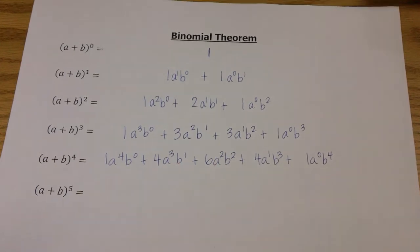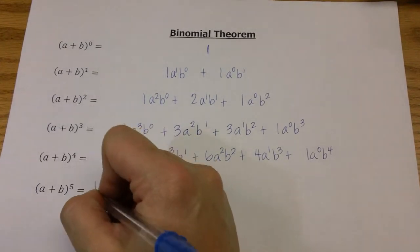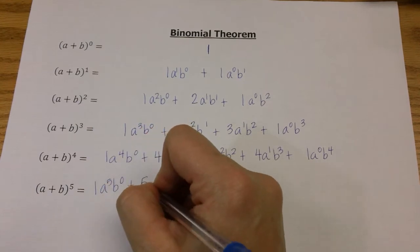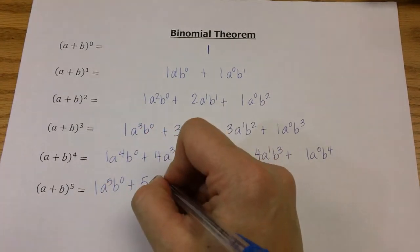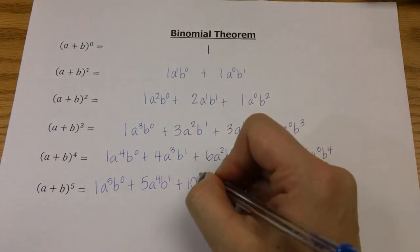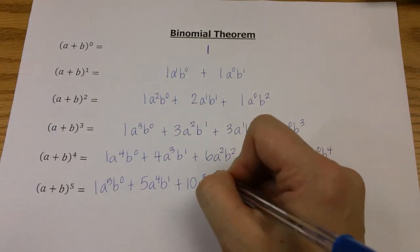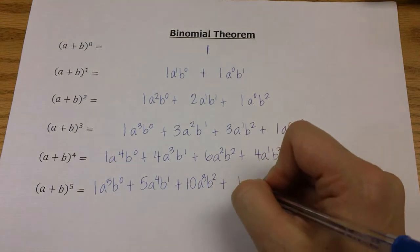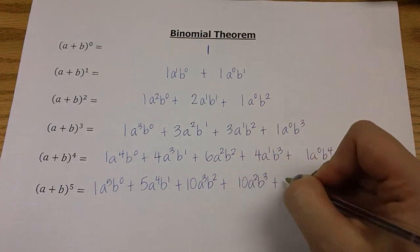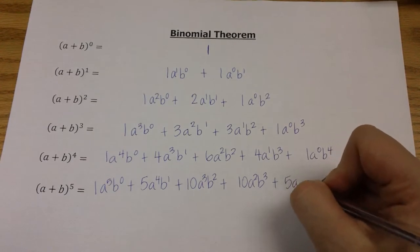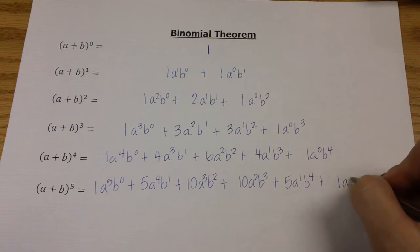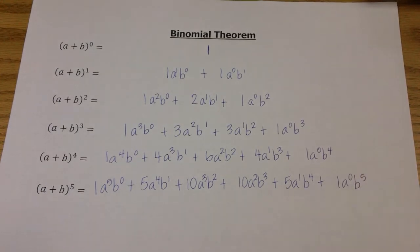And then our last row, a plus b to the fifth, is going to be one a to the fifth b to the zero, plus five a to the fourth b to the first, plus ten a to the third b to the second, plus ten a to the second b to the third, plus five a to the first b to the fourth, plus one a to the zero b to the fifth.